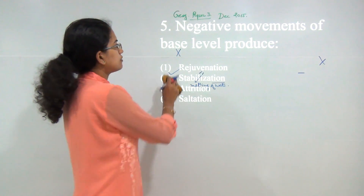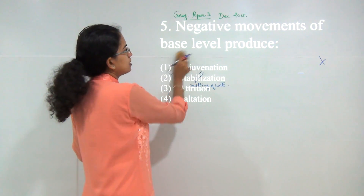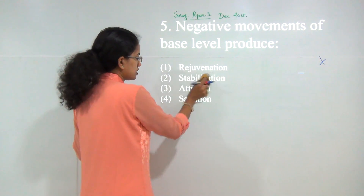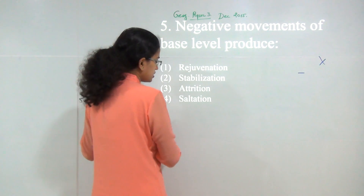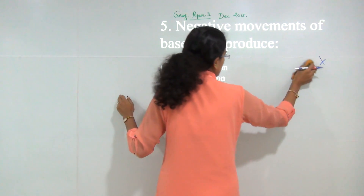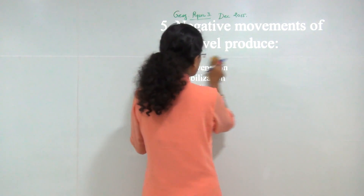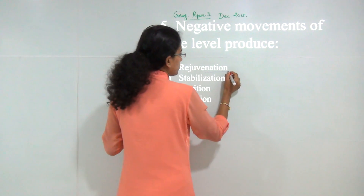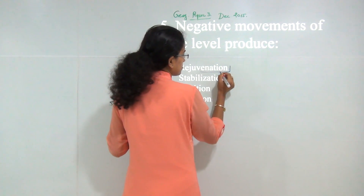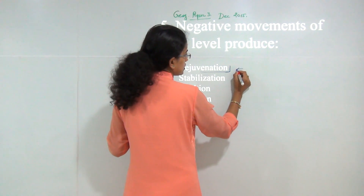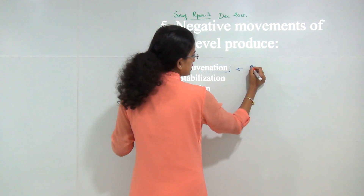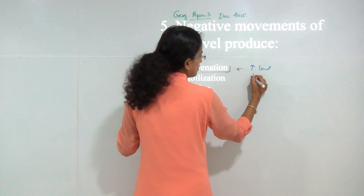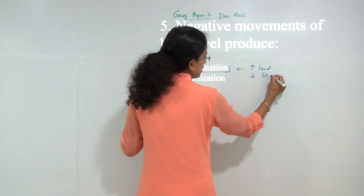Next question: the negative movements of the base level produce rejuvenation. Rejuvenation leads to rising of land and fall in sea level. That is how we understand the concept of rejuvenation — rising of land and fall in sea level.